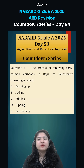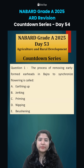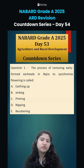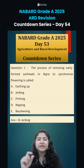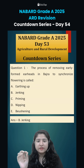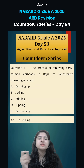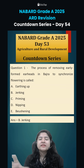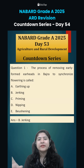Question number one: the process of removing early formed ear heads in bajra to synchronize flowering is called 'jerking'. In pearl millet, some plants form ear heads early, so jerking is done to remove them, resulting in synchronized flowering across all plants so that all intercultural operations can happen at the same time.